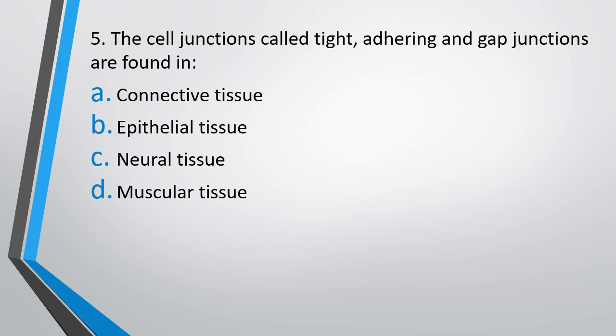Question number 5: The cell junctions called tight, adhering, and gap junctions are found in: connective tissue, epithelial tissue, neural tissue, or muscular tissue? The correct answer is option B — these cell junctions are found in epithelial tissue.